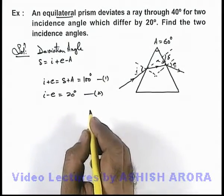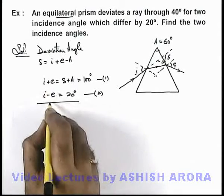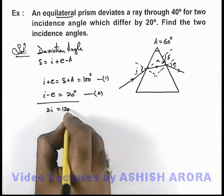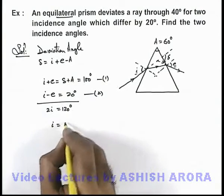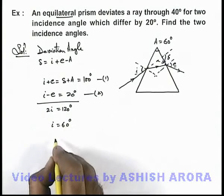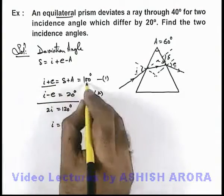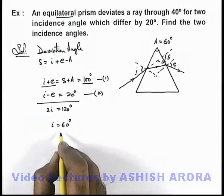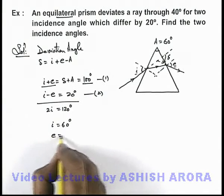Now in this situation if we add the two equations, we are getting 2i is equal to 120 degrees, so the value of i is equal to 60 degrees. And as i plus e is 100 degrees and if i is 60 degrees, that means the value of e will be 40 degrees.